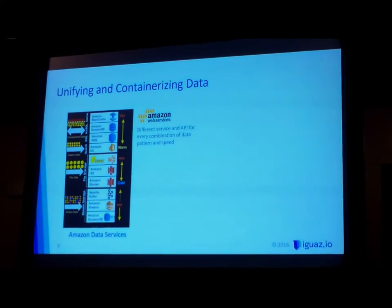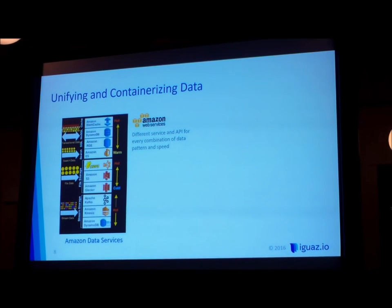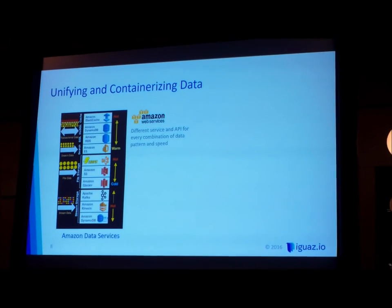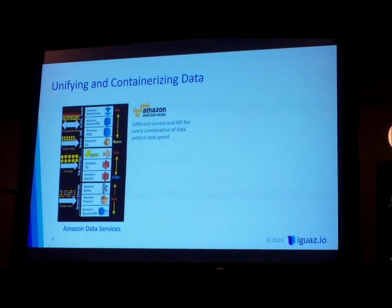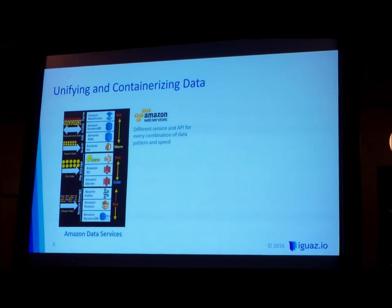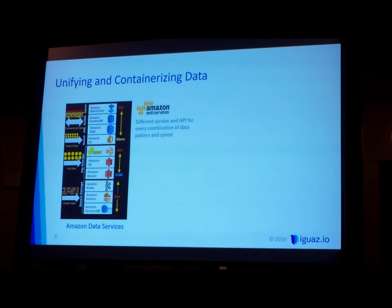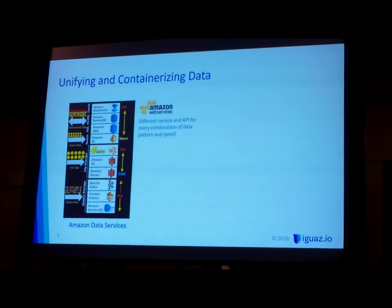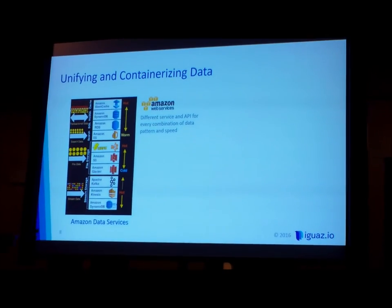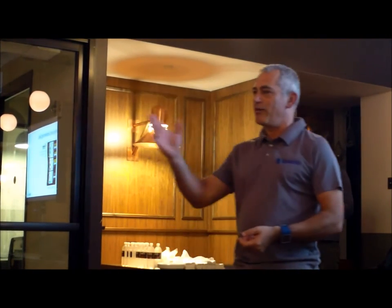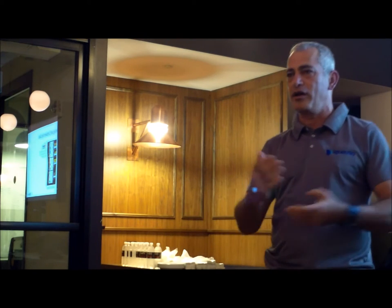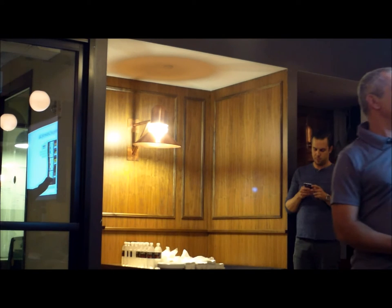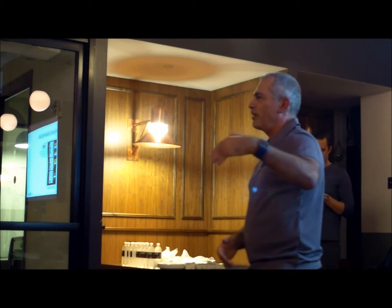One solution is going to Amazon. The real cloud-native approach means starting those companies and Amazon will offer you a service for every need. This is just a partial example — they've actually added more services since this slide, like EFS and others. They'll tell you that for every combination of data model, data pattern, and data temperature, they have a different service for you. And for every different service, they'll have a unique API.